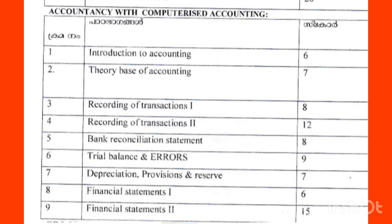So, how did we get to the exam? You know, plus one accountancy with computerized accounting. There are 90 chapters. In those 90 chapters, I want to show you how important each chapter is and what you are going to learn from each chapter in this particular video.